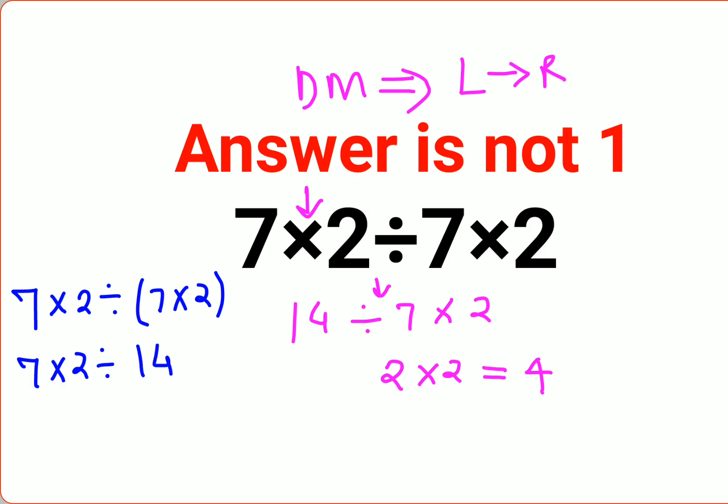So seven times two is fourteen, and then we will do from left to right. So again, seven times two comes first, so we'll do fourteen divided by fourteen and then the answer will be one. I hope this is very clear to everyone. That's it for today. I will see you in the next video.